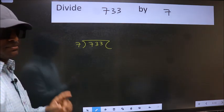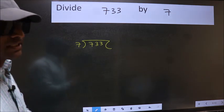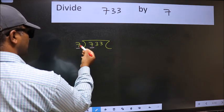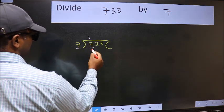This is your step 1. Next, here we have 7 and here 7. When do we get 7 in 7 table? 7 once 7.